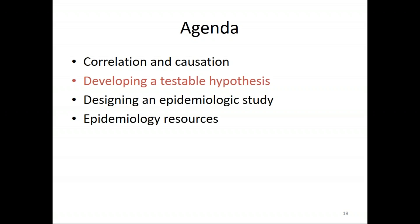We have statistical methods that deal with confounding — for example, stratifying by looking at men and women separately, or within age strata. Those can help deal with confounding when we can actually measure our confounder. For selection bias, there are some statistical approaches, but mostly it's a design issue. The biostatistics and epidemiology classes in the school of public health can teach you some of these tools.